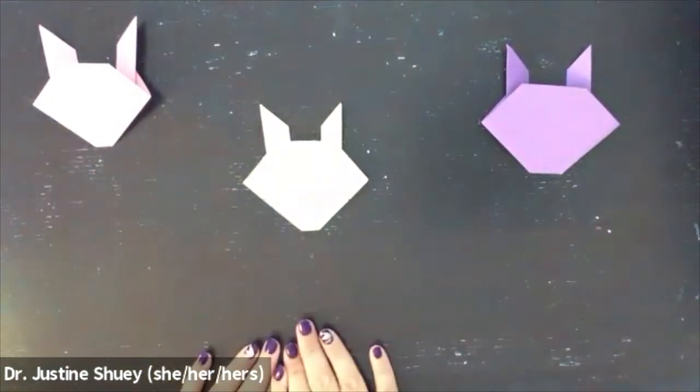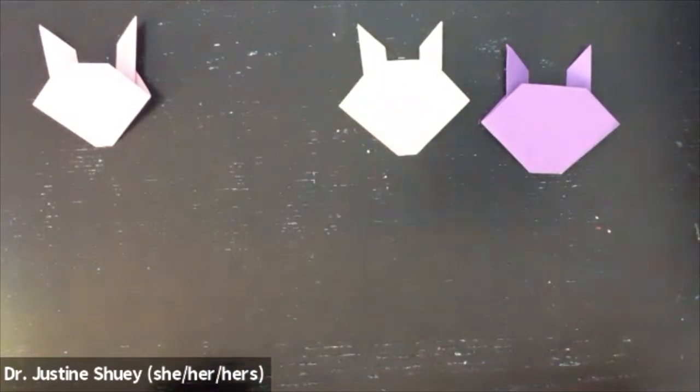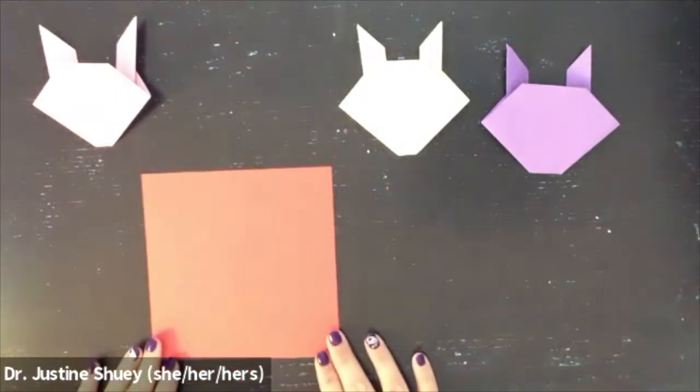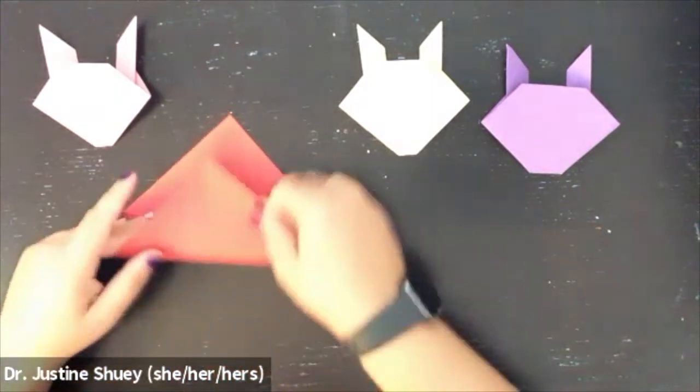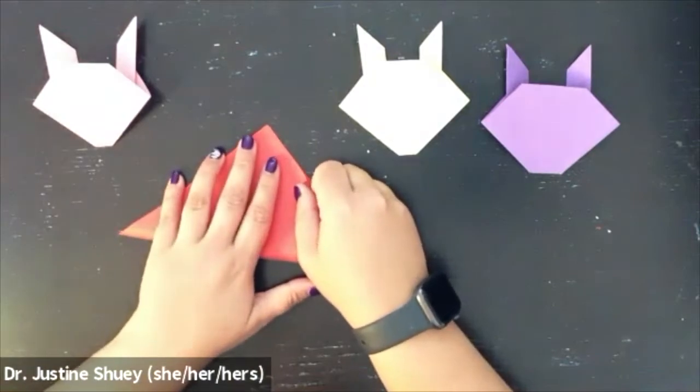So I'm going to do this one one more time for you. For this one again, we're going to start with a square sheet of paper. We're going to fold in half corner to corner to make two triangles.